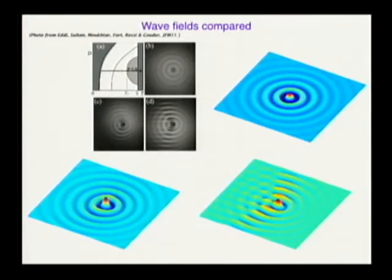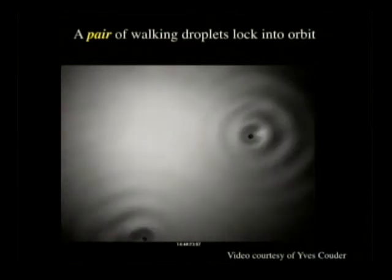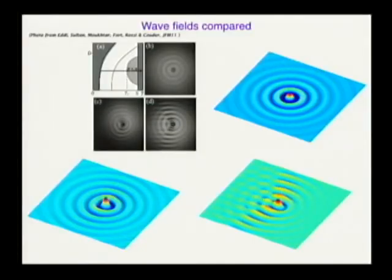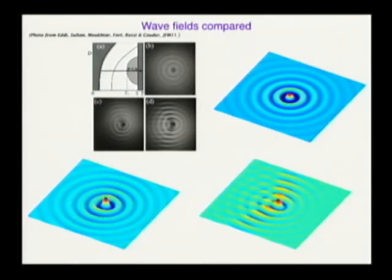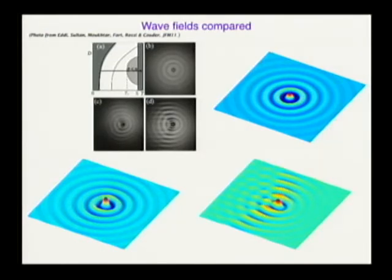These are pictures from Yves Coudet's JFM 2011 paper showing wave fields of three slightly different regimes: steady bouncing, slightly walking, and walking at greater speed — showing a horseshoe interference pattern behind due to memory of previous hits. These are the corresponding wave fields from our numerical model. Qualitatively it's doing something similar: very axisymmetric for steady bouncing, starting to walk, and the walking one. Good news — let's keep going.